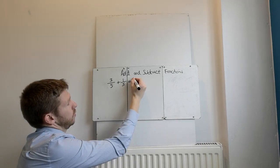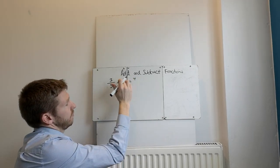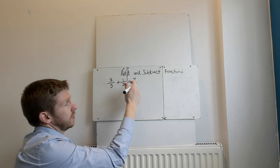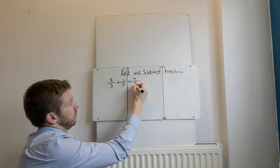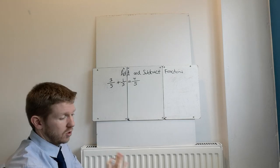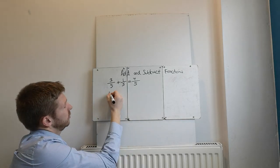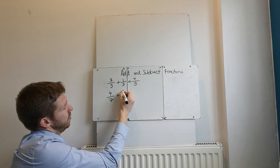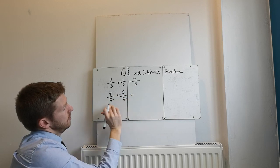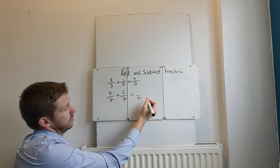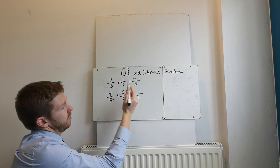3 and 1, 4. 3 fifths and 1 fifth, 3 donkeys and 1 donkey, 4 donkeys, so 4 fifths. It should be straightforward. 4 sevenths plus 5 sevenths. Again, the denominator is going to stay the same, so it's 7. 4 plus 5 is 9.